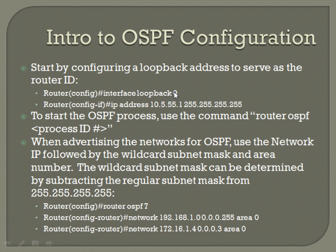That jumps you into interface configuration mode. Then use: IP address, your IP, and subnet mask. Remember on a loopback, it's going to be a /32 — 255.255.255.255 all the way across. To start the OSPF process, use the command: router OSPF, then the process ID. The process ID number does not have to match on all routers — it's an arbitrary number. The reason you have a process ID is for the very specific situation where you might be running two versions of OSPF on the same router.